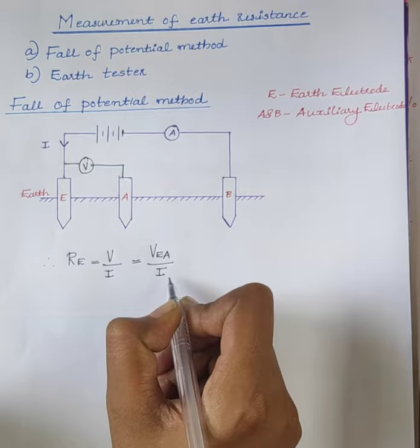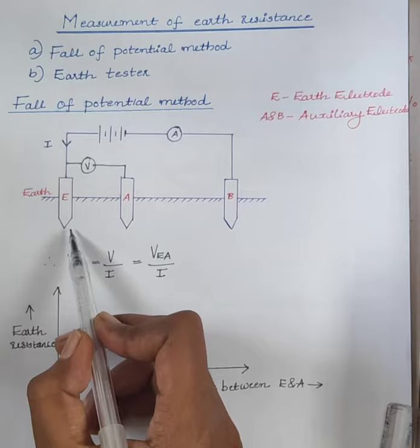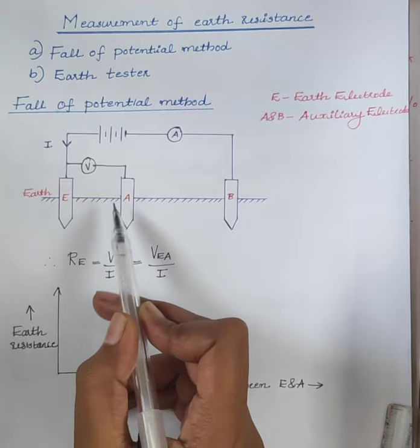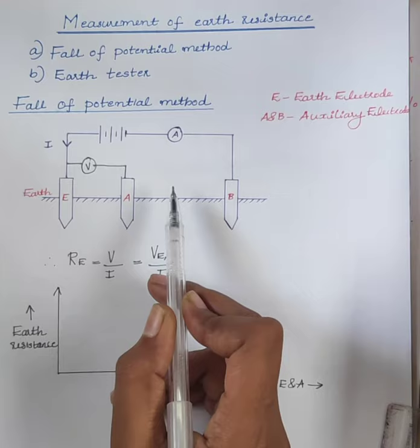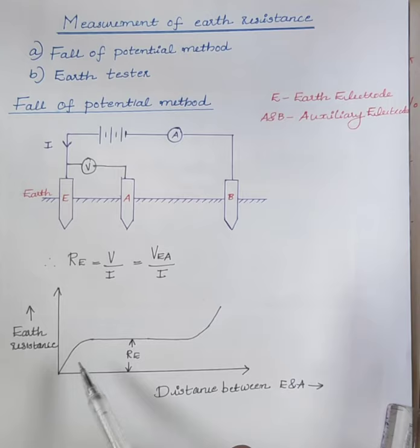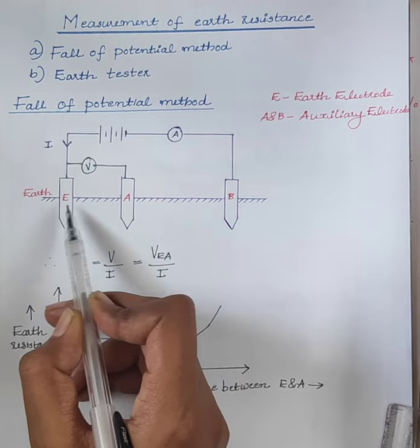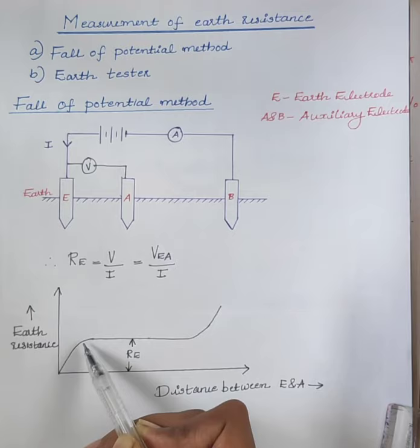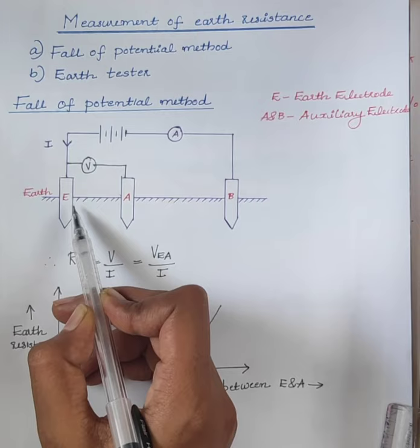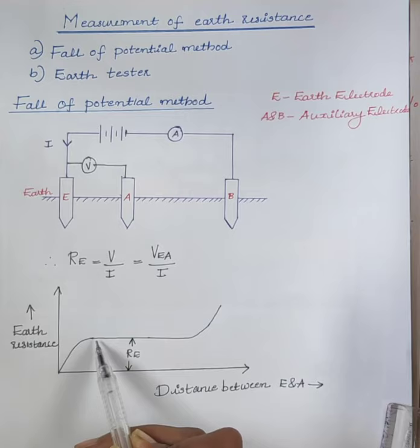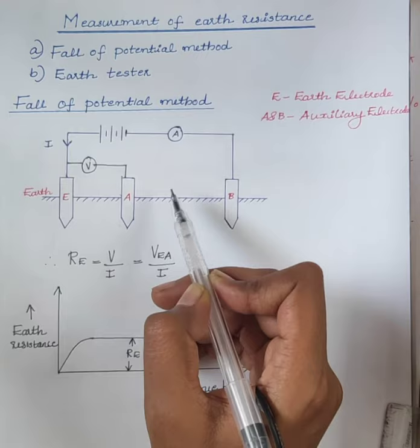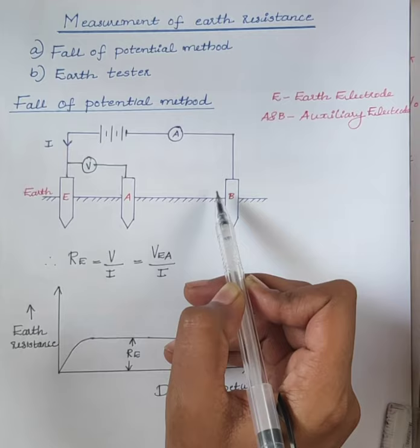The positions of electrodes E and B are fixed, and the position of electrode A is changed. Resistance measurements are done for various positions of A. From the graph, it is clear that the measurement of earth resistance depends upon the position of auxiliary electrode A. When E and A are closer, the earth resistance rises rapidly. When the distance between the earth electrode and auxiliary electrode is increased, the earth resistance becomes constant. When the auxiliary electrode A approaches electrode B, the resistance again increases.